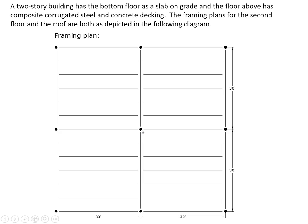Each of these circles represents a column — it might be a tubular column or a wide flange, but for now we're representing it as a circle. There are nine columns altogether: three along this row, three along this row, and three along this one. The spacing from column to column centerline in every case is 30 feet. Beams are depicted as simple lines; every lightweight line represents a lightweight beam.